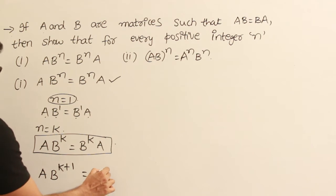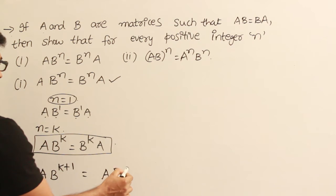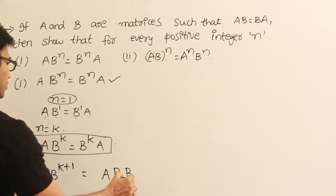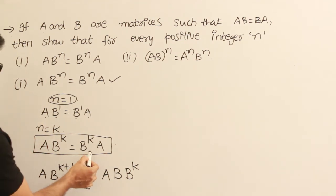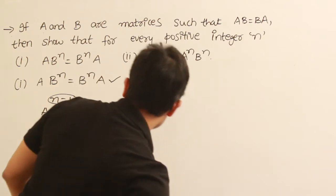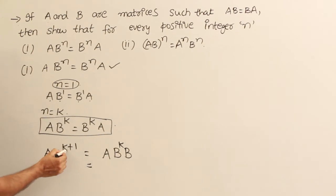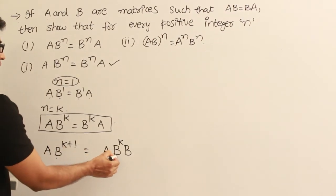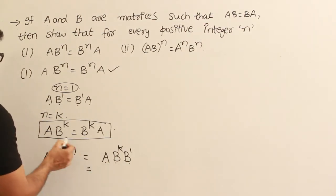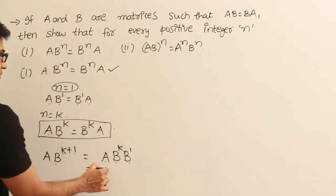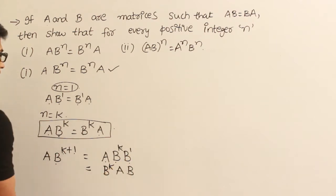Here you can write A into B power K plus 1 as A into B power K into B. We already know that A into B power K is equal to B power K into A, so substituting, we get B power K into A into B.